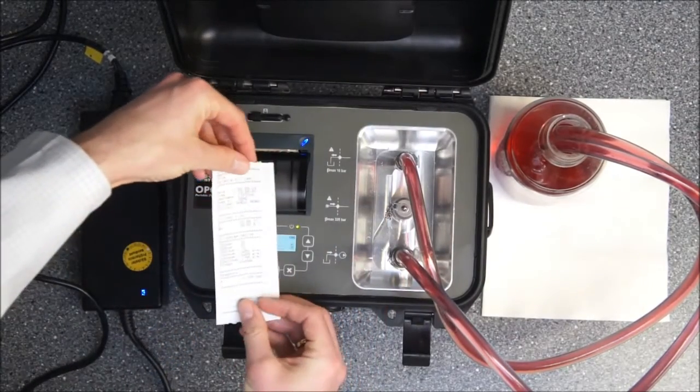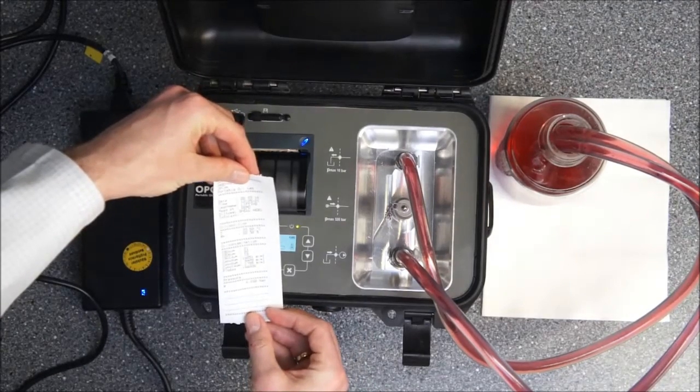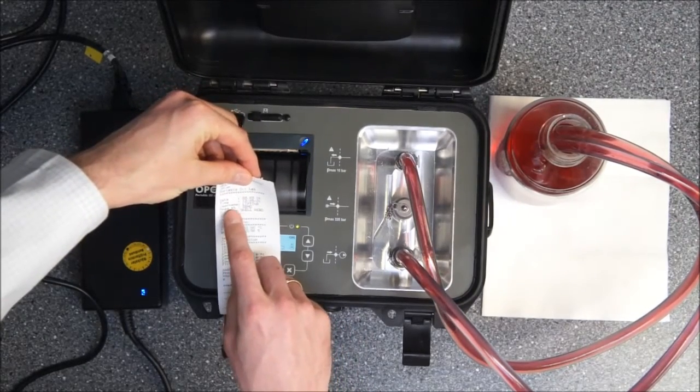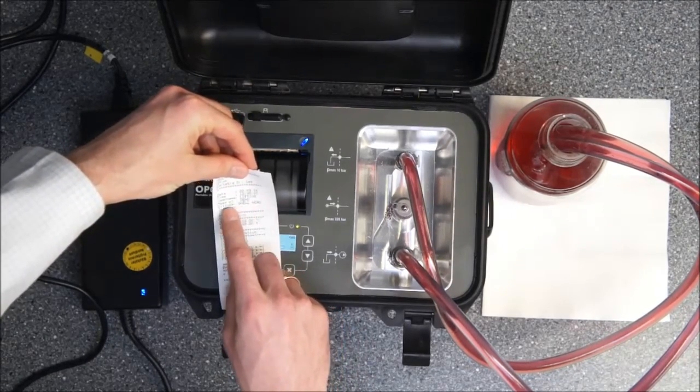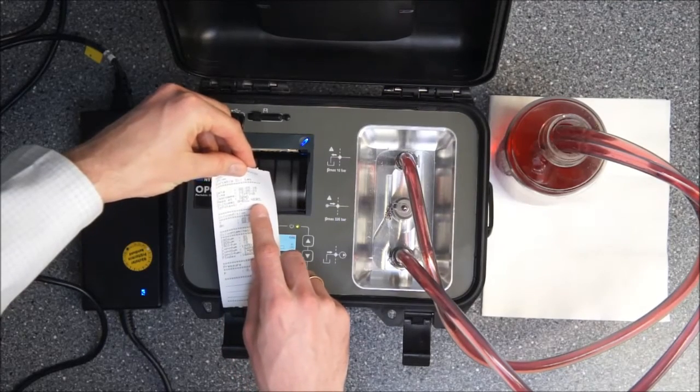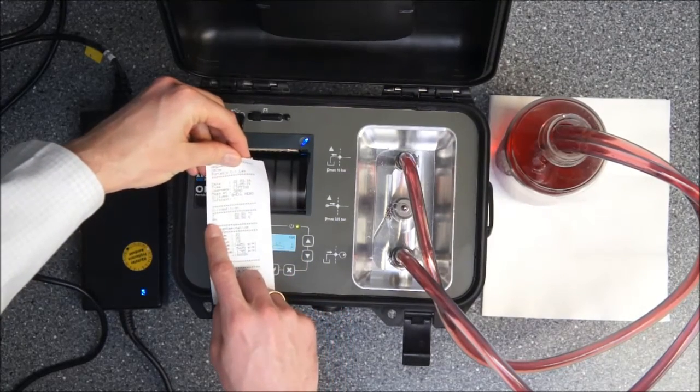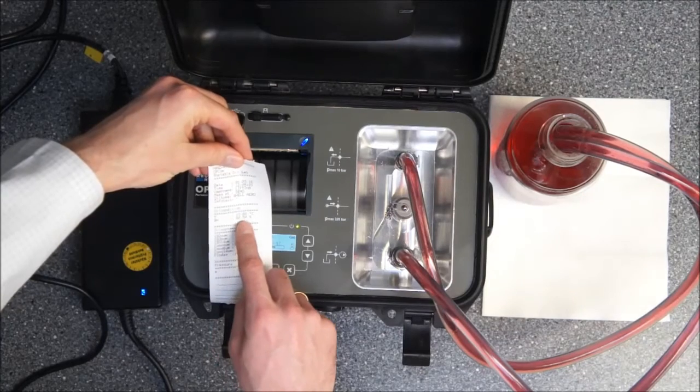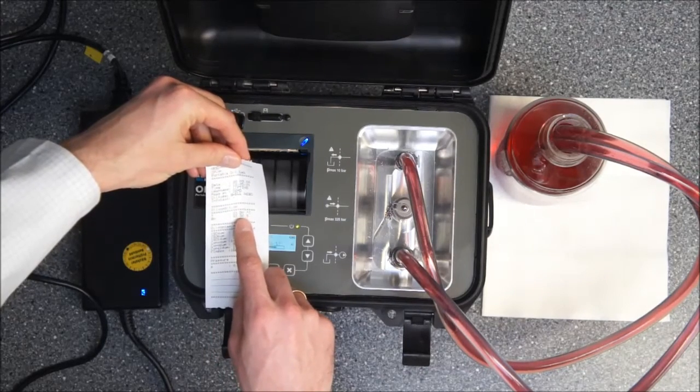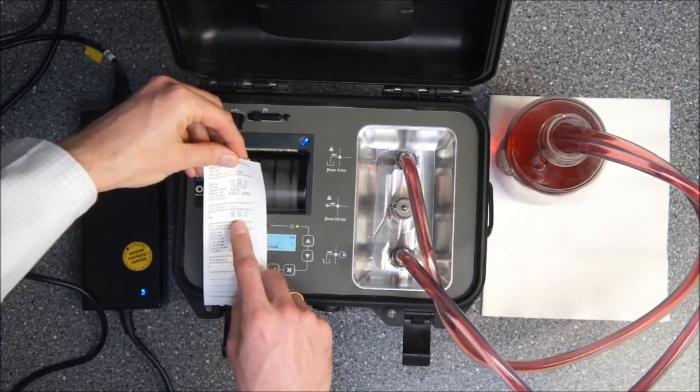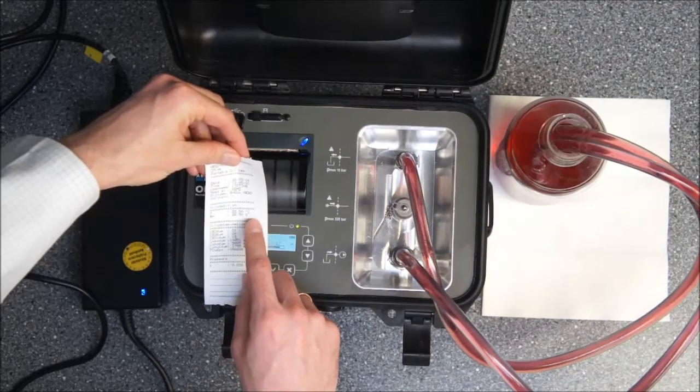On the printout you see now additional to time the place where we have done that, the measurement point. That's our demo and also the oil type that we have measured. Additionally you see the oil condition according to temperature and relative humidity. So we see temperature is approximately at room temperature and relative humidity is very low so our oil is in good condition.